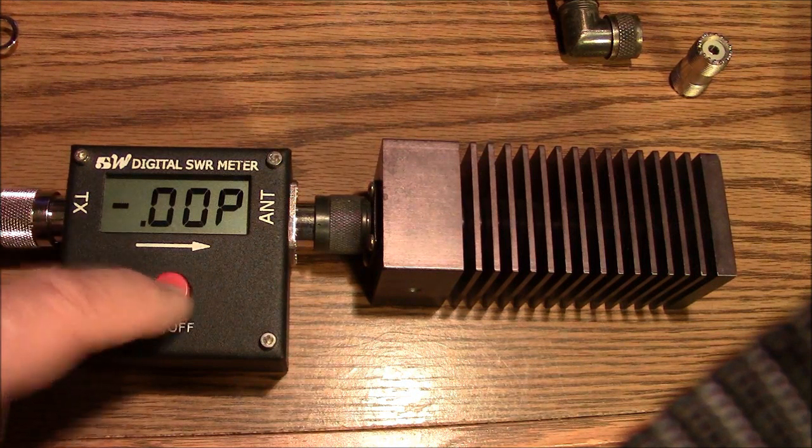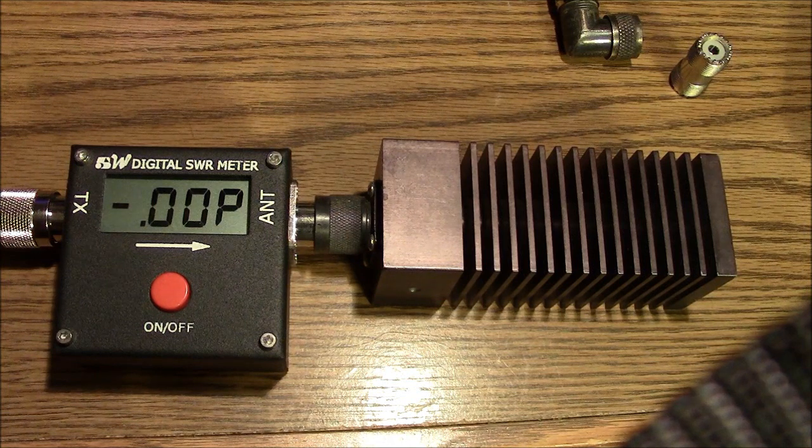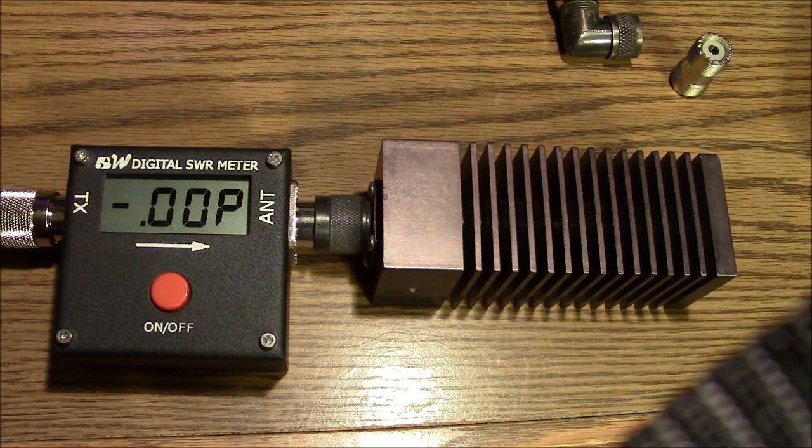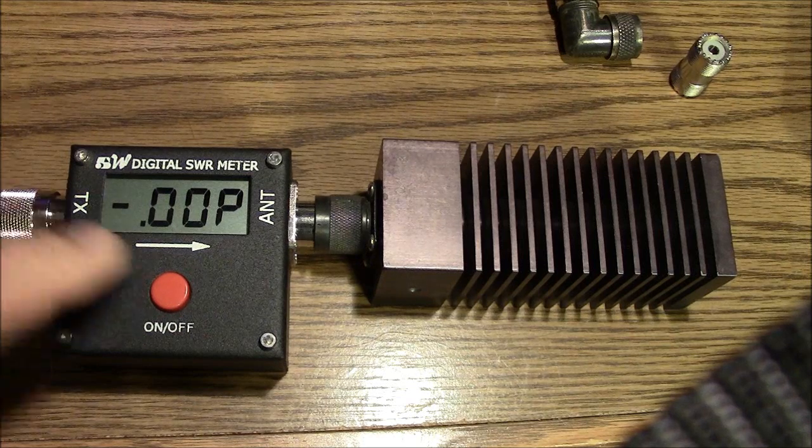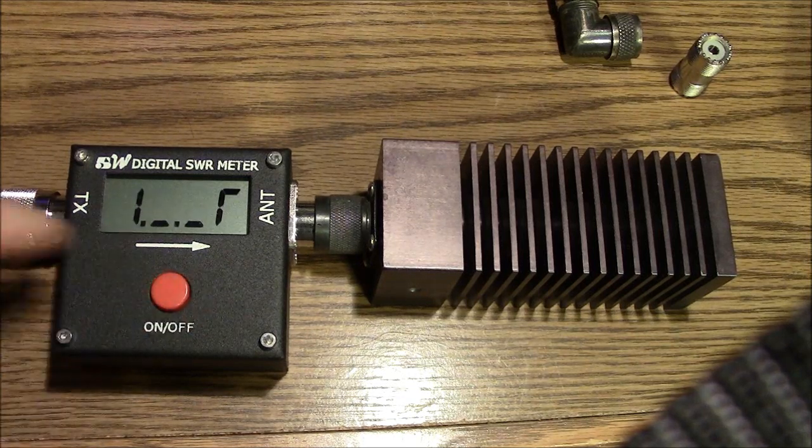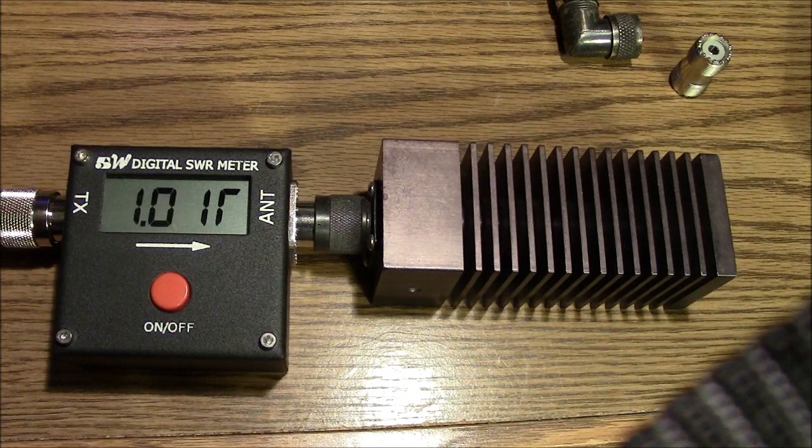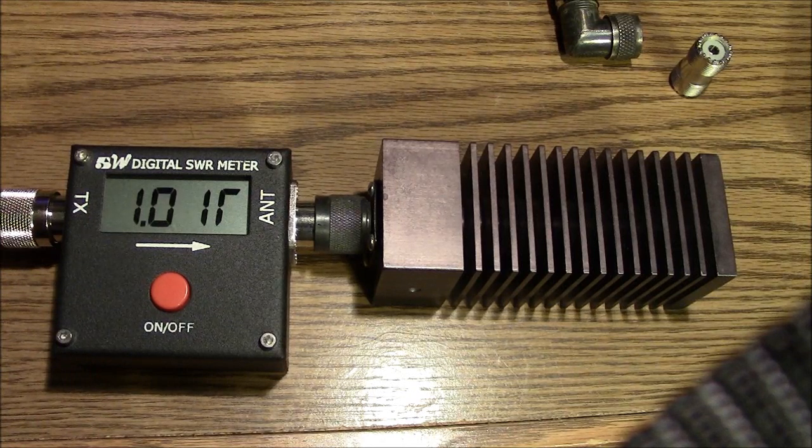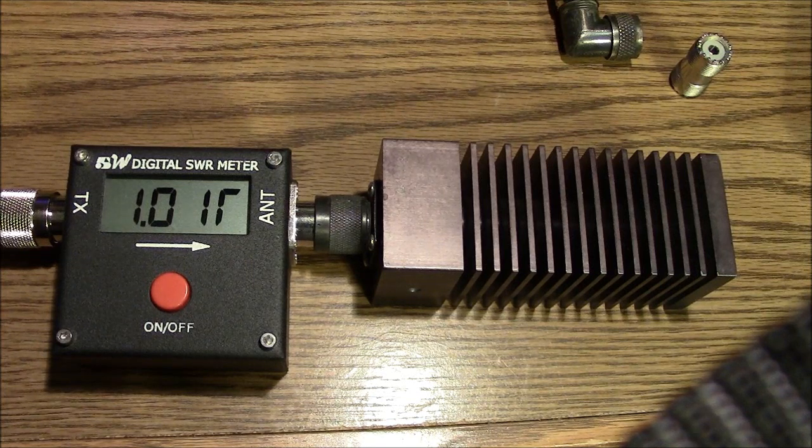I release it, stop it, reverse reading out of a dummy load, nothing, that should be correct, it's a good dummy load so nothing is coming back. I release it again, stop it, hit it again and I've got a one to one SWR or one to zero SWR, a perfect, almost a near perfect SWR coming out of that dummy load.